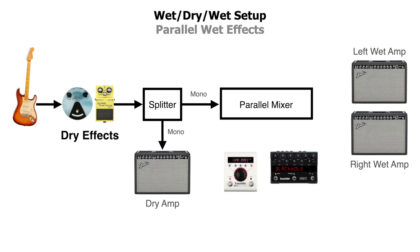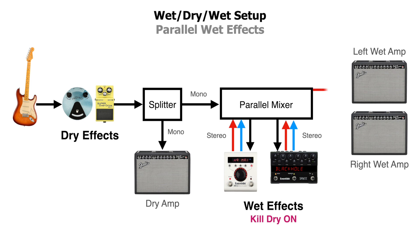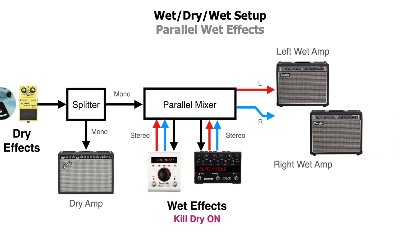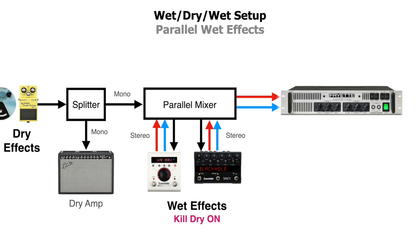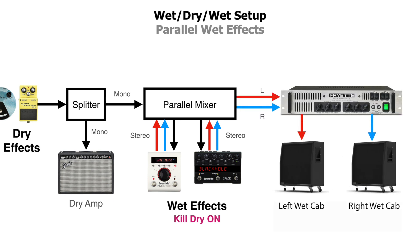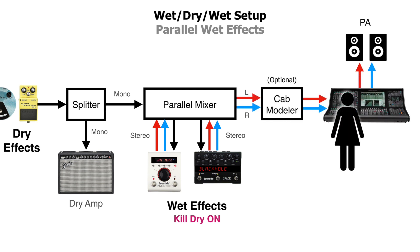Traditional wet/dry/wet rigs incorporate a parallel mixer that feeds a mono signal to each stereo pedal and returns only the wet signal from each. The signals get mixed, and the left output goes to the left amp and the right output goes to the right amp — this way a delay and reverb ring out independently instead of having each tap of a delay getting reverb on it like in a series configuration. For players with effects loops, it's common to bypass the wet amp's preamp section by connecting the mixer outputs to the effects return of each amp. The H90 makes it easy to emulate parallel paths by putting the post-splitter wet effects in parallel.